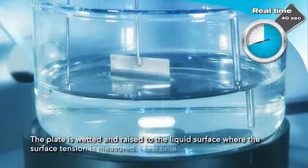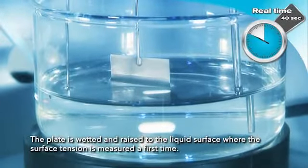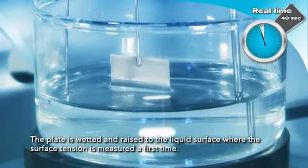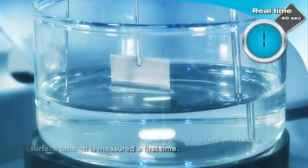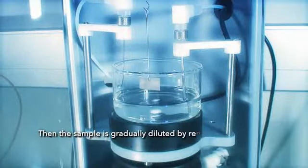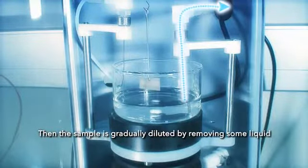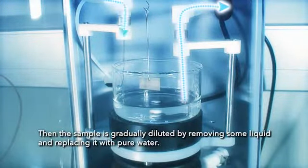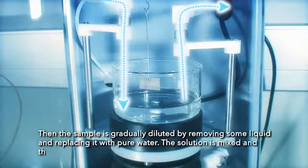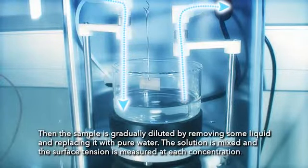The plate is wetted and raised to the liquid surface, where the surface tension is measured a first time. Then the sample is gradually diluted by removing some liquid and replacing it with pure water. The solution is mixed and the surface tension is measured at each concentration.